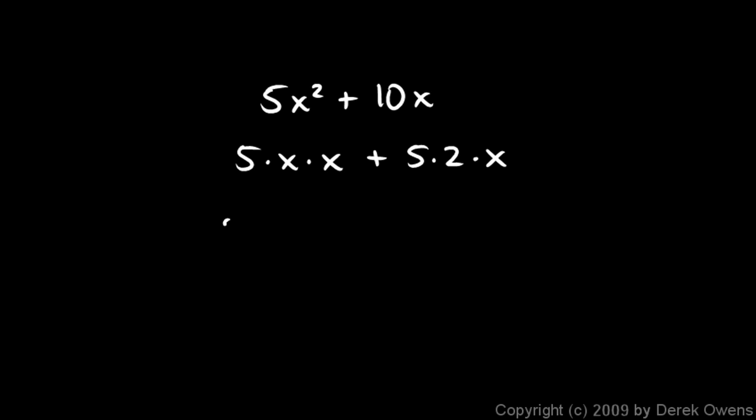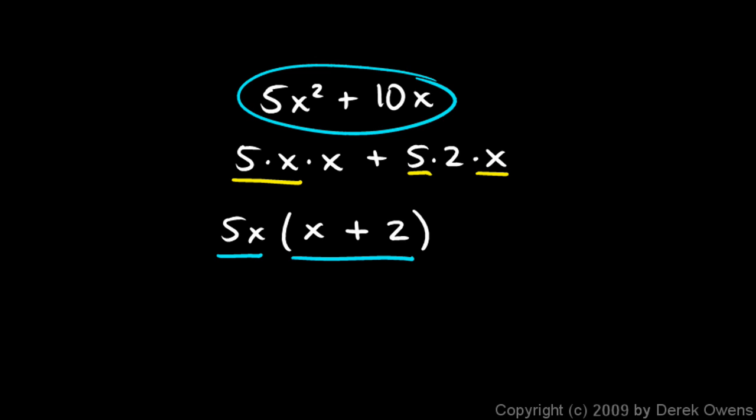So I'll factor out a 5x. And here, when I get rid of the 5x, that leaves me with an x. And then I have my plus sign. And over here, when I get rid of the 5 and the x, that leaves me with a 2. So I have x plus 2. 5x times x plus 2. That's one factor, and that's another. I've taken my original expression and broken it up into two factors.